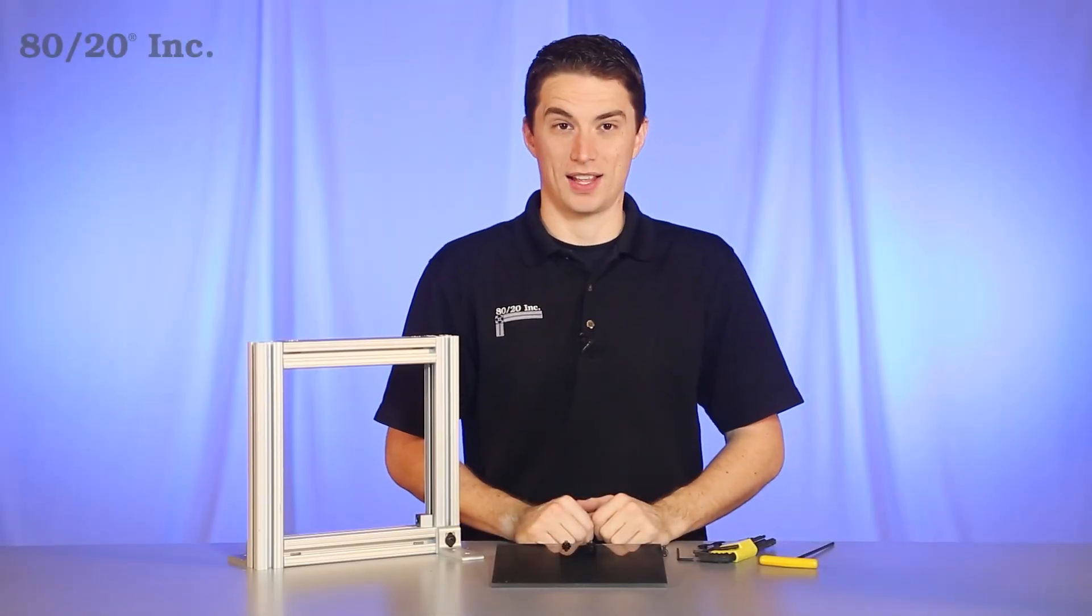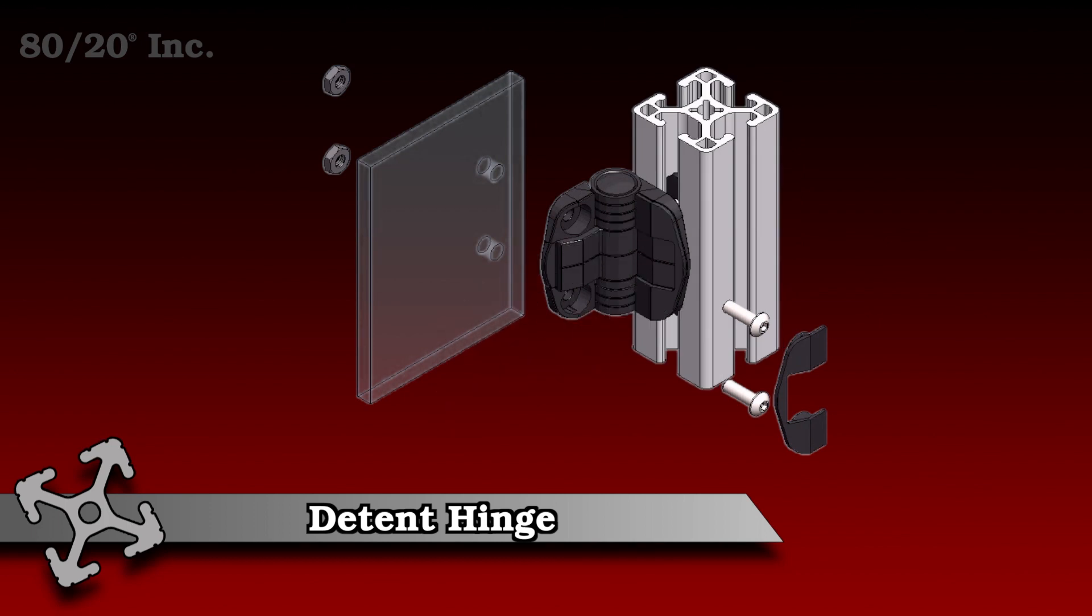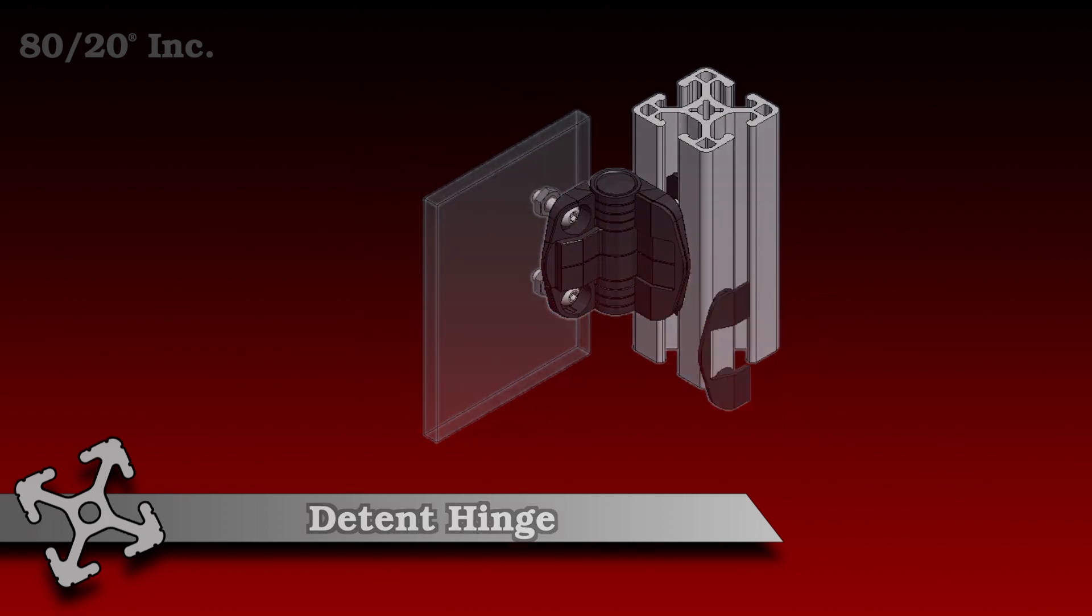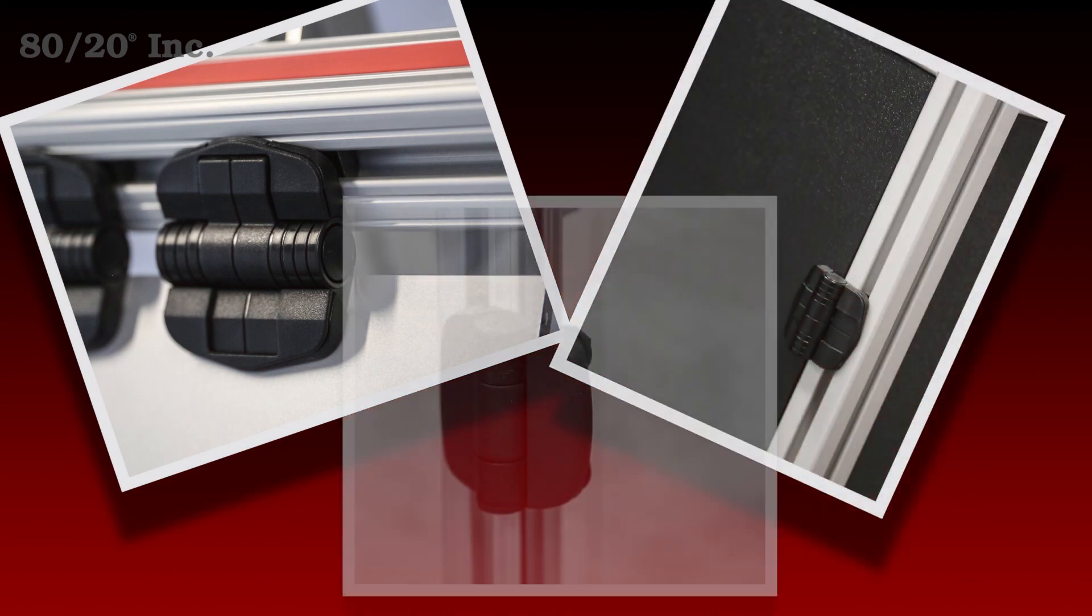Hello, and welcome to 8020's Product Highlight Series. Today we'll be taking a look at detent hinges. These hinges are great for holding doors open at different angles. They're easy to install, available in both fractional and metric, and compatible across a wide range of profile series.